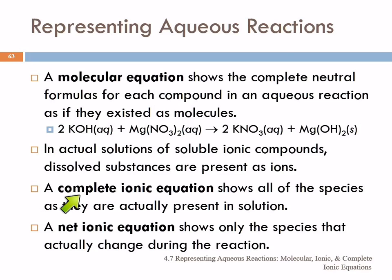A complete ionic equation shows all the species as they're actually present in solution. So we would see potassium ion aqueous and hydroxide ion aqueous and magnesium ion aqueous and nitrate ion aqueous, and here potassium and nitrate aqueous. This is a solid and so that would not be shown as individual ions.